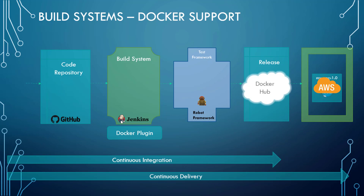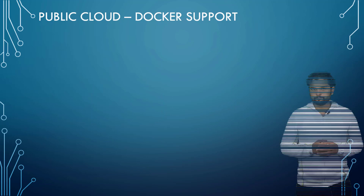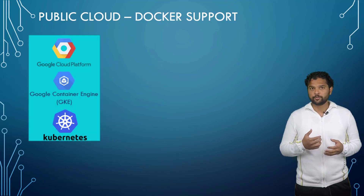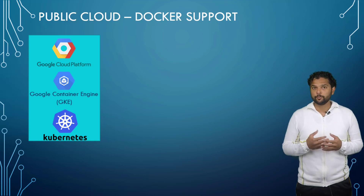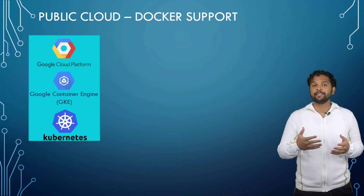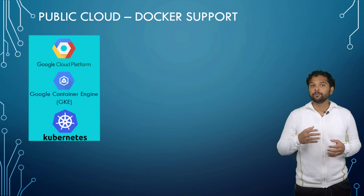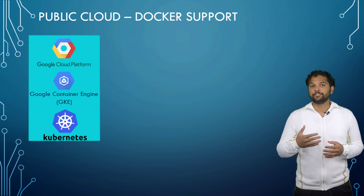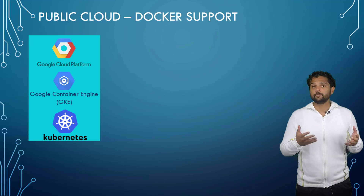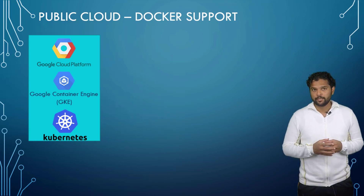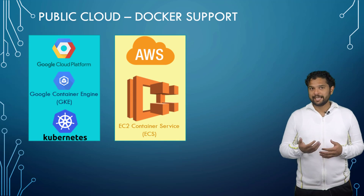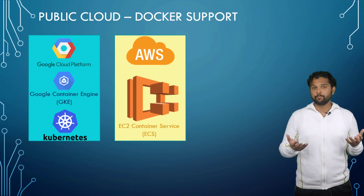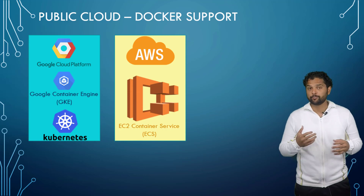The next step is to deploy this image in production. Major cloud service providers like Amazon, Google, and Azure all support containers. Google Container Engine supports running containers in production on Kubernetes clusters. Kubernetes is a container orchestration technology, which is an alternate solution to Docker Swarm. AWS has ECS, which stands for EC2 Container Service, providing another mechanism to run containers in production.